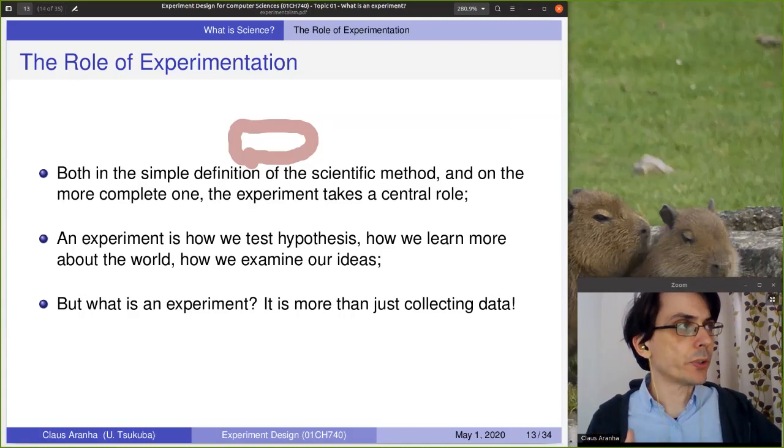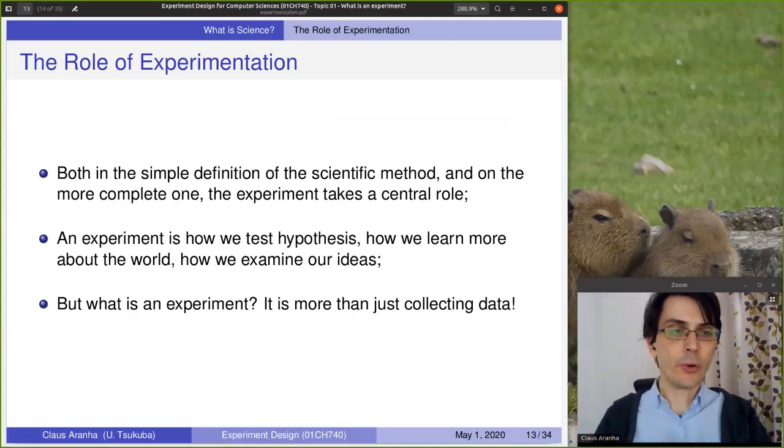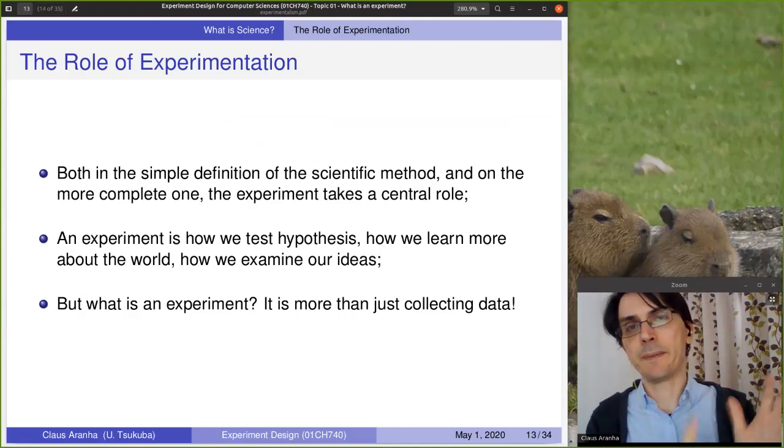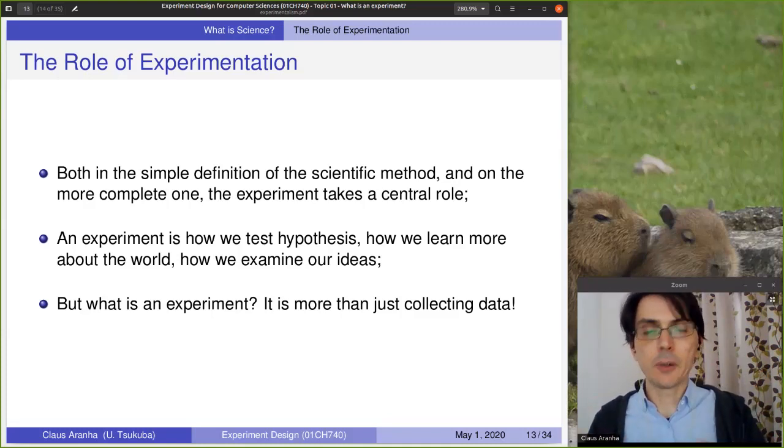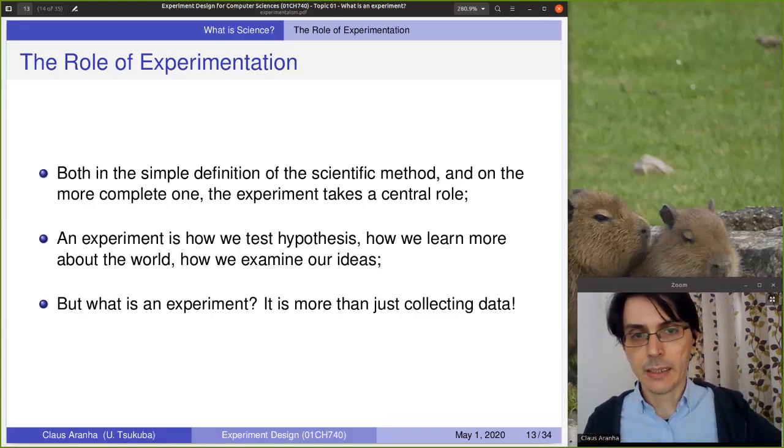Now, inside of this and the focus of this course is experimentation. Both in the simple definition of the high school definition of science and the more interactive definition of science, experiments take a central role. Why is that? Experiments are how we get data about the world. We can do the hypothesis, we can talk to other people, but at some point we have to go out there, look out of the window and see what are the facts. And that's how we're going to get new knowledge. To get these facts, we need to do experiments. So what is experiments? Is experiments just going out and collecting data? That's the focus of this lecture. I am going to stop this video right now so that you can think a little bit about it. Think a little bit about science. Think a little bit about science as a living subject. Think a little bit about your favorite scientists. Leave your comment saying who is your favorite scientist. And in the next video, we're going to talk about what is an experiment. See you in a second.